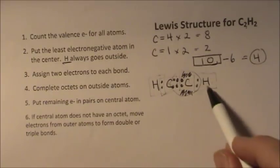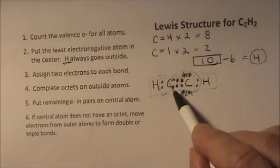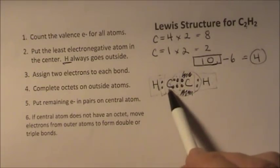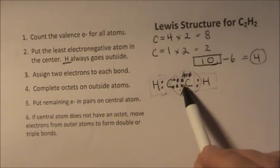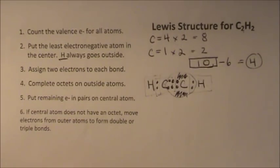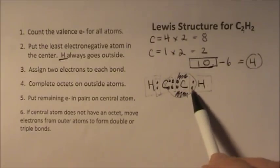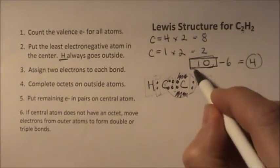It has an octet. And this carbon has two, four, six, eight. It has an octet. And if we count them all up, we have two, four, six, eight, ten valence electrons, which is what we had to start with.